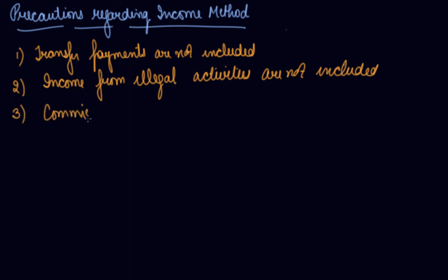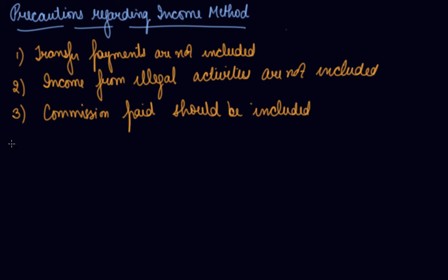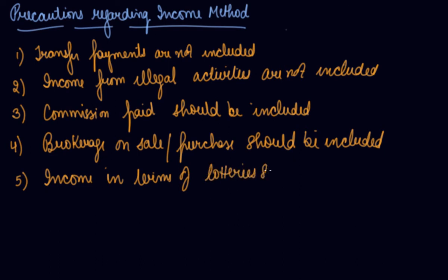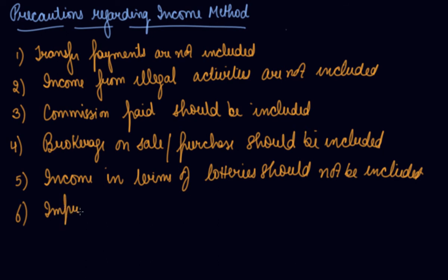Commission paid should be included because it is a new income being generated in the economy. Fourth, brokerage on sale or purchase should also be included, as it is again a new income generated in the economy. Income in terms of lottery should not be included. Imputed rent — that is, owner-occupied houses — is to be treated along with rent as a component of factor income, so imputed rent should be included.